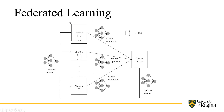Now, federated learning: the key difference from distributed learning is that the client's data stays at the client server. There are clients A through N and a central server. The central server sends a global dummy model to each client. Each client trains the dummy model on their local data separately. After training, the models are sent back to the central server. Model aggregation then happens at the central server, and the updated model goes back to each local client.